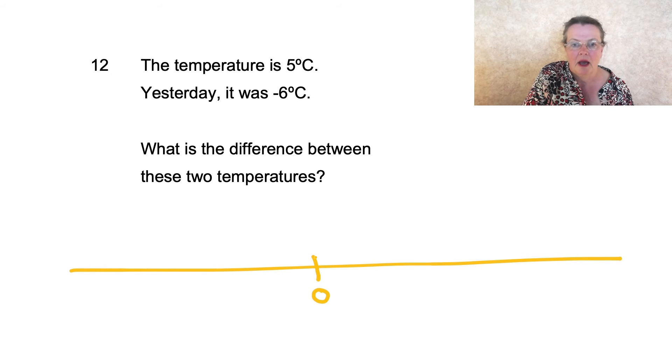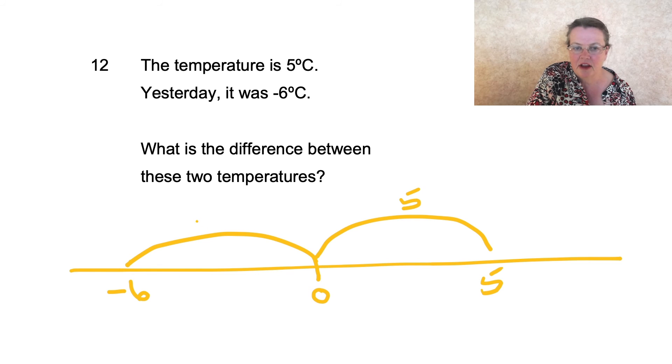So there's naught. It would be 5 degrees yesterday. So that's 5, isn't it? It was minus 6 yesterday and there's that. That's your minus 6.